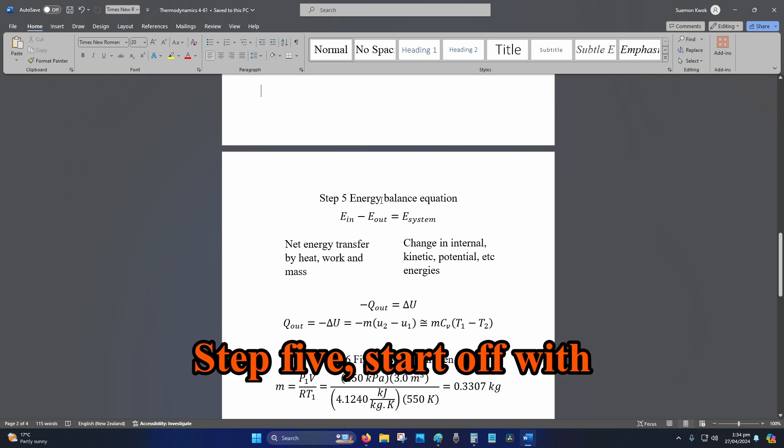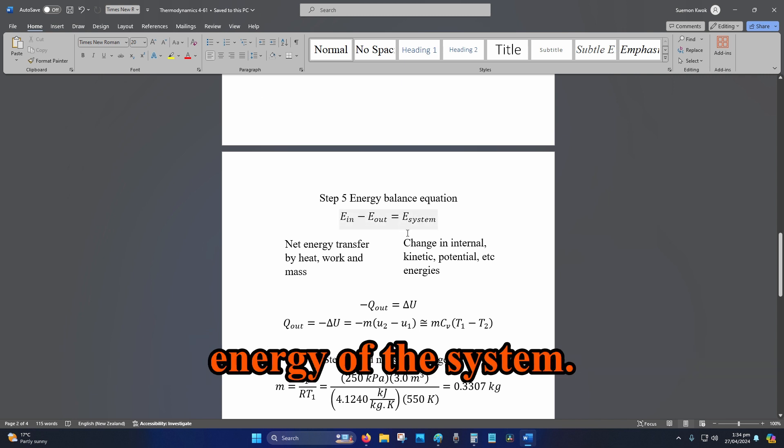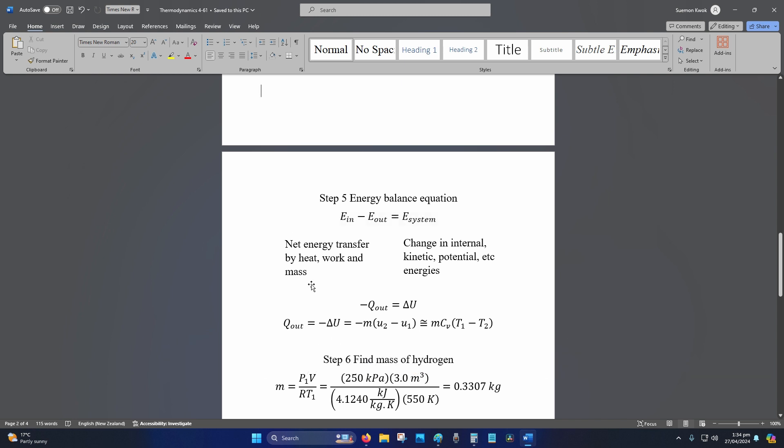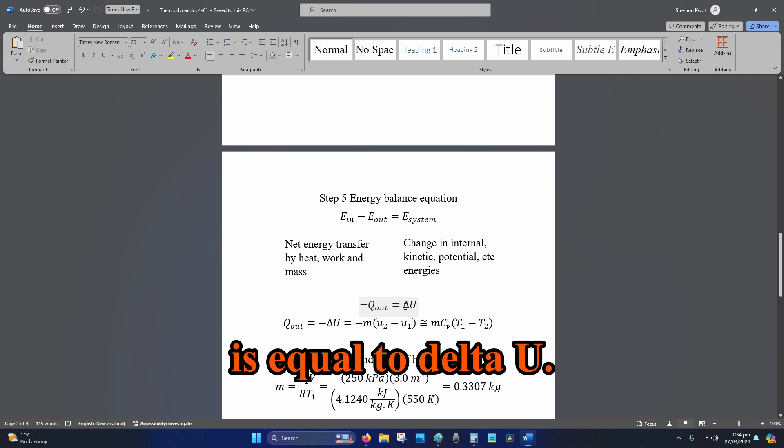Step 5, start off with your energy balance equation. Energy in minus energy out is equal to energy of the system. From there, we derive the formula for heat transfer. We got minus Q out is equal to delta U.